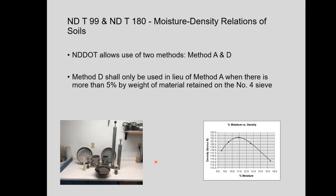The North Dakota DOT modified the AASHTO standard to only allow Method A and Method D. Method D should only be used in lieu of Method A when there's more than 5% of weight retained on the number four sieve. Method D is used without correction for soil aggregates with material passing the three-quarters inch sieve, but corrections must be made for materials with 30% or less retained on the three-quarter inch sieve — that is the North Dakota T224.